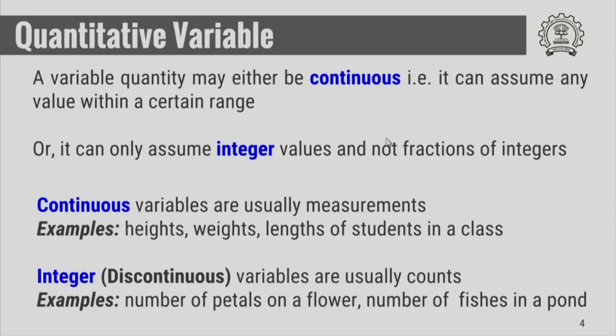Now, let us talk about quantitative variables. A variable quantity may either be continuous, meaning it can assume any value within a certain range, or it can only assume integer values and not fractions of integers - that means, it can assume only whole numbers.